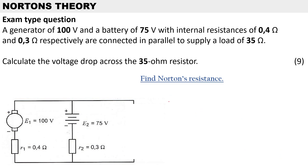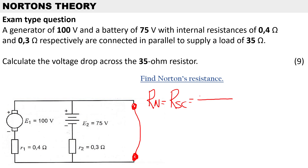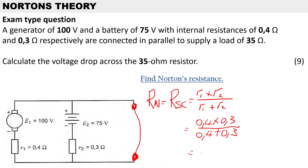The next step is to calculate Norton's resistance. We short circuit the load resistor to do this calculation. Norton's resistance RN is the same as the short circuit resistance, and we use the current divider rule and the product-over-sum rule: R1 times R2 over R1 plus R2. So 0.4 multiplied by 0.3 over 0.4 plus 0.3 gives us a resistance of 0.171 ohms — that is Norton's resistance.